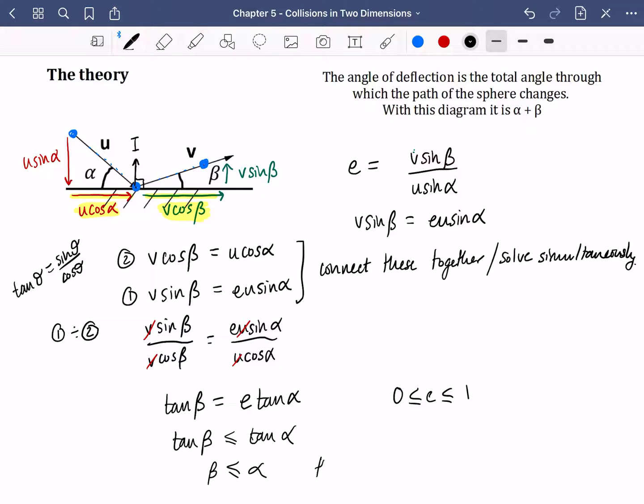Now if tan beta is less than tan alpha that is actually just saying that beta is less than alpha. In other words, the angle it bounces off the wall is smaller than it approaching the wall. And I can show you that in the diagram. This angle is smaller than this angle. And it makes sense because these stay the same. And this line is always going to be made smaller because some of the energy is lost when that ball hits the wall.